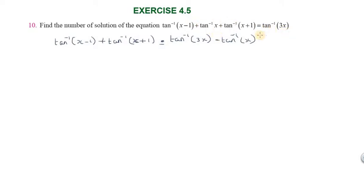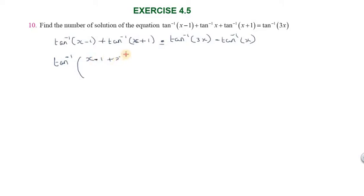Because substituting x equals 0 makes x minus 1, x, and x plus 1 all satisfy the equation. We apply the formula: tan inverse of a plus tan inverse of b equals tan inverse of (a plus b) divided by (1 minus a times b), using a equals x minus 1 and b equals x plus 1.